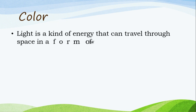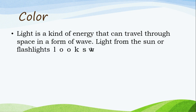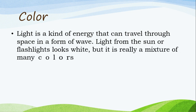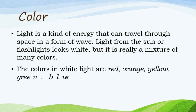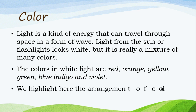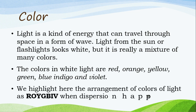Colors. Light is a kind of energy that can travel through space in the form of a wave. Light from the sun or flashlights looks white but is really a mixture of many colors. The colors in white light are red, orange, yellow, green, blue, indigo, and violet. We highlight here the arrangement of colors of light as ROYGBIV when dispersion happens.